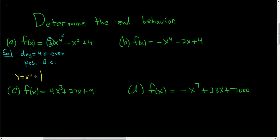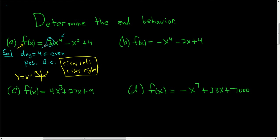y = x² looks something like this — it rises left and rises right. Therefore our polynomial also rises left and rises right. To recap: find the degree, determine if it's even or odd, find the leading coefficient and whether it's positive or negative, then write down the simplest function you can think of and find its end behavior. This one rises left and rises right, so our original polynomial must do the same.